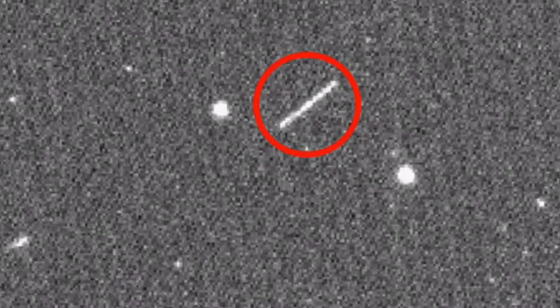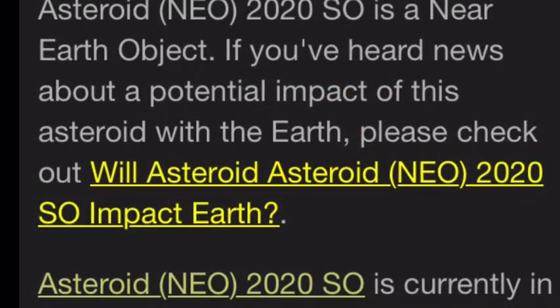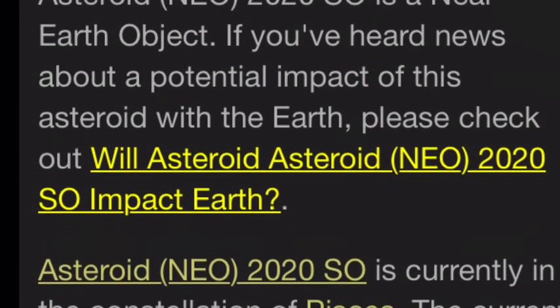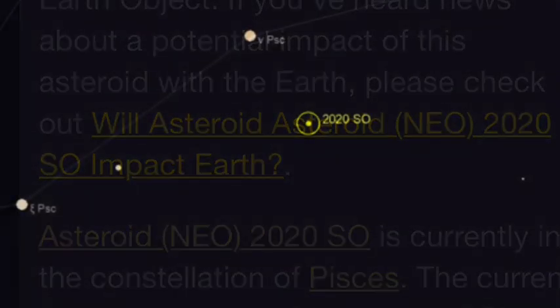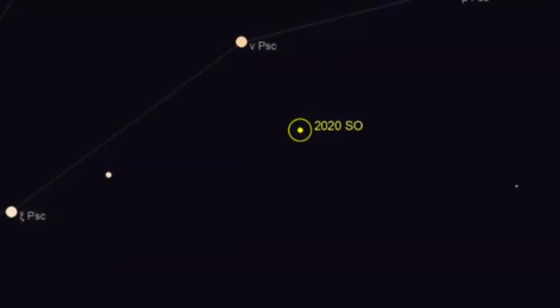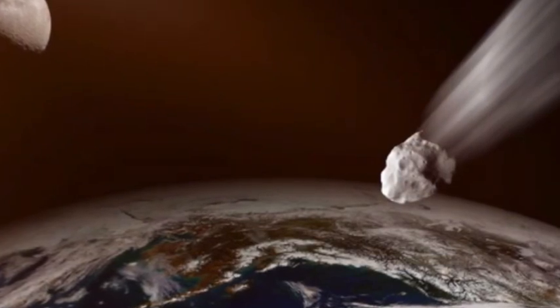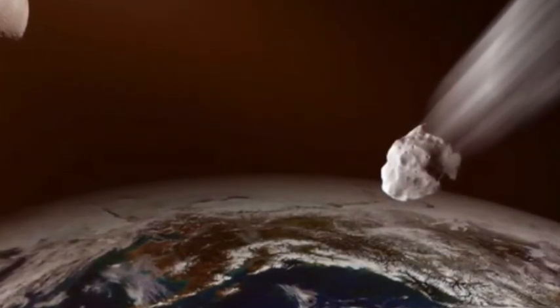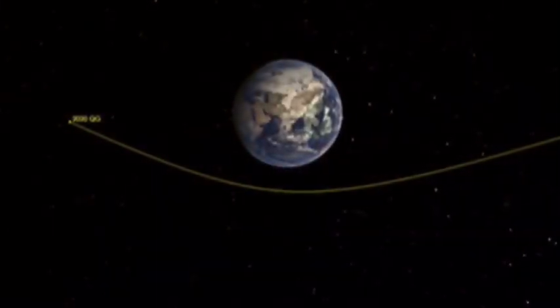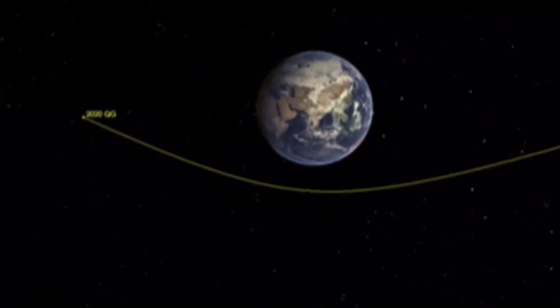Another object named 3753 Cruithne was already dubbed the Earth's second moon, meaning 2020 SO would be our third. So there's three. Wow, interesting. So there's these objects, three of them, that are heading toward or at Earth's orbit. I think it's kind of weird, it's three, by the way.